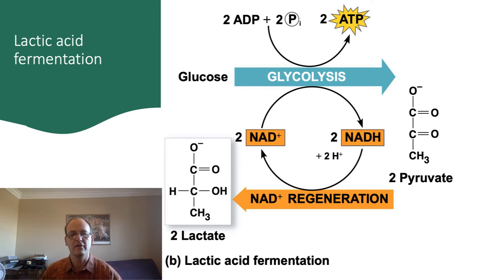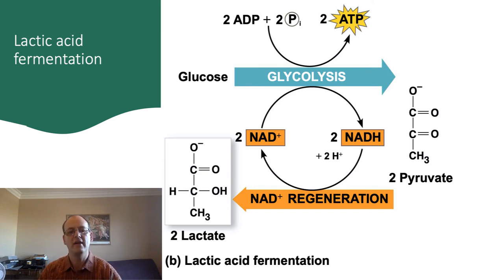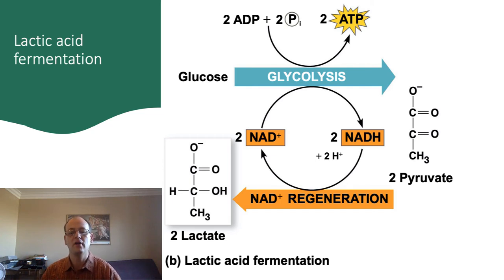Up on top, we have glycolysis, abbreviated into a single process. It shows that NAD+ is required to accept an electron to form NADH. Under the circumstances we just looked at, this would be the end of the road, because there would be no way to regenerate NAD+ from NADH without electron acceptors. However, in fermentation, the pyruvate is able to accept electrons from the NADH, and therefore regenerate NAD+, which can then feed back into another round of glycolysis. The result of pyruvate accepting these electrons is that it turns into lactate. The benefit to the cell should be obvious, since now glycolysis can continue, and ATP can continue to be produced.